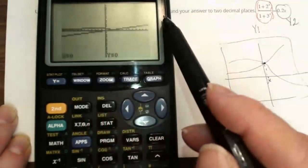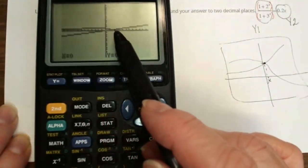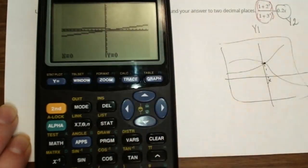And the second graph, and these two graphs intercept somewhere right here. And you can find the x-coordinate of the intercept now.